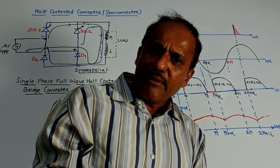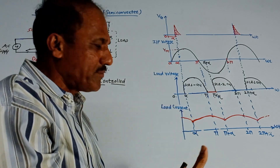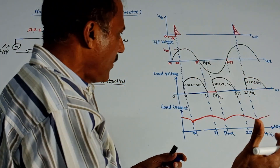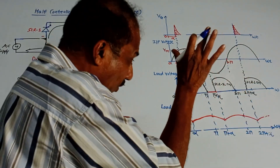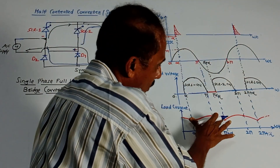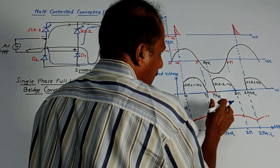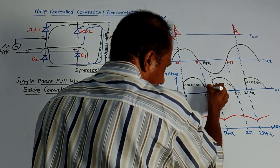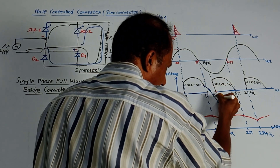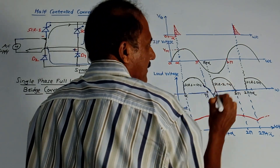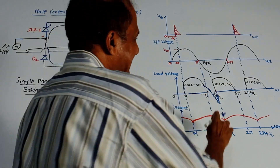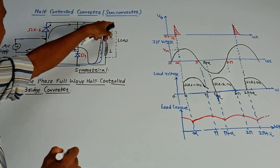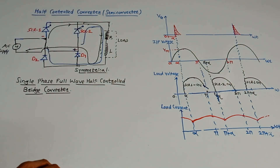We have studied the full-wave converter with RL load. What is the major difference between those waveforms and this type? In the full-wave converter it was a continuous voltage waveform, but in this case the output voltage is zero during the freewheeling period. This is called a semi-converter or half-controlled converter.